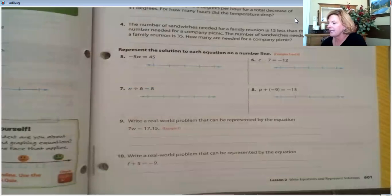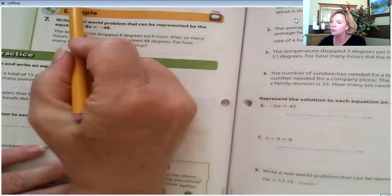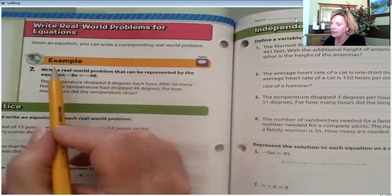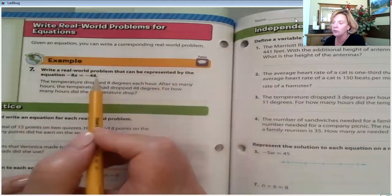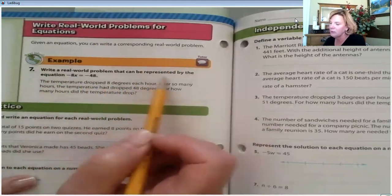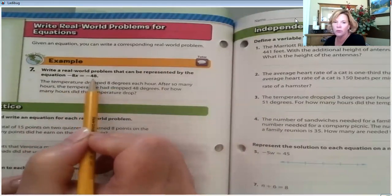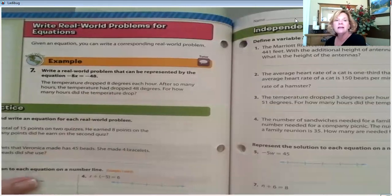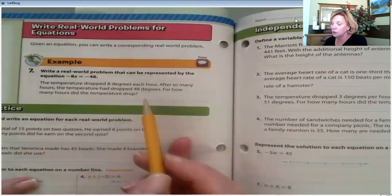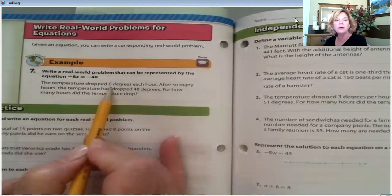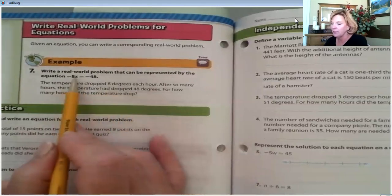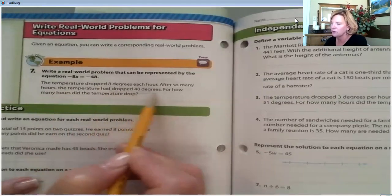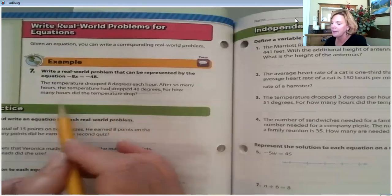Okay. So, let's do one more example. We're going to write real world problems. We're going to write real world problems for equations. So, given an equation, you can write a corresponding real world problem. So, let's say, write a real world problem that can be represented by this equation, negative eight x equals negative 48. Okay. So, you can see already that the author of your textbook has decided to make this a temperature situation. So, the temperature dropped eight degrees. Wouldn't we represent that as negative eight? Okay. Sure. Each hour. Do we know how many hours? Not yet. After so many hours, the temperature had dropped 48 degrees. Again, dropped 48 degrees will represent that as negative 48. For how many hours did the temperature drop?